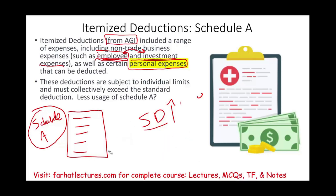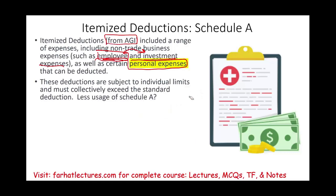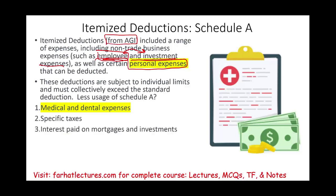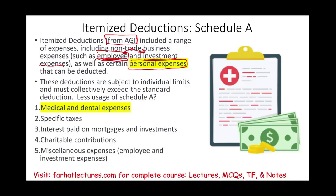The idea was: just take the standard deduction so you don't have to add up all those itemized deductions, which consist of medical and dental expenses, specific taxes, interest paid on mortgage and investments, charitable contributions, and other miscellaneous expenses — which are suspended. In this session we will discuss specifically medical and dental expenses.